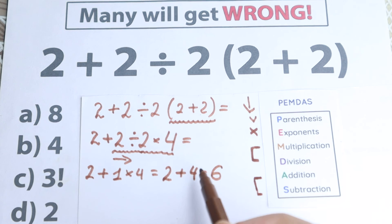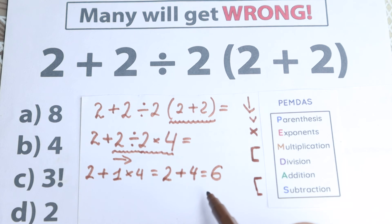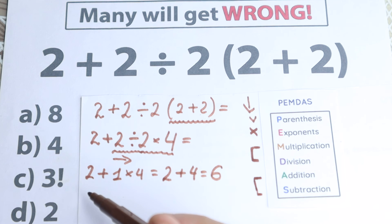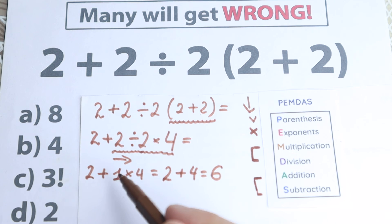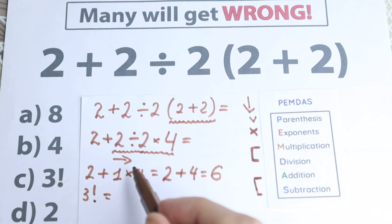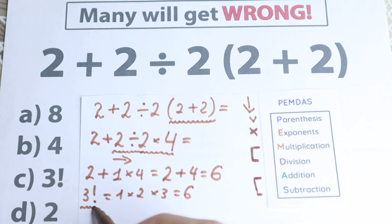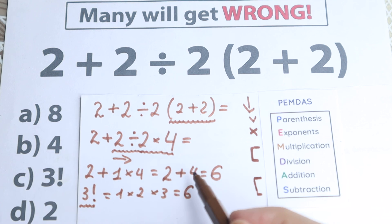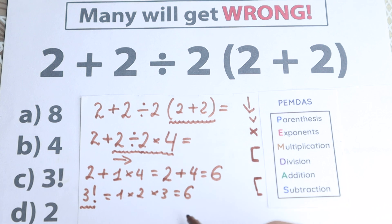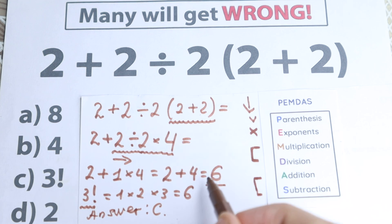Now here's a really interesting moment — we don't see 6 listed as an option. We have 8, 4, 3 factorial, and 2. So the correct answer according to PEMDAS is 6, but how do we choose the correct letter? Well, 3 factorial — from school we know that 3 factorial is the product from 1 up to 3: 1 times 2 times 3. That gives 2 times 3 equals 6. So 3 factorial equals 6 — that's the trick in this question! The correct answer is 6, and on this test the correct answer is option C.